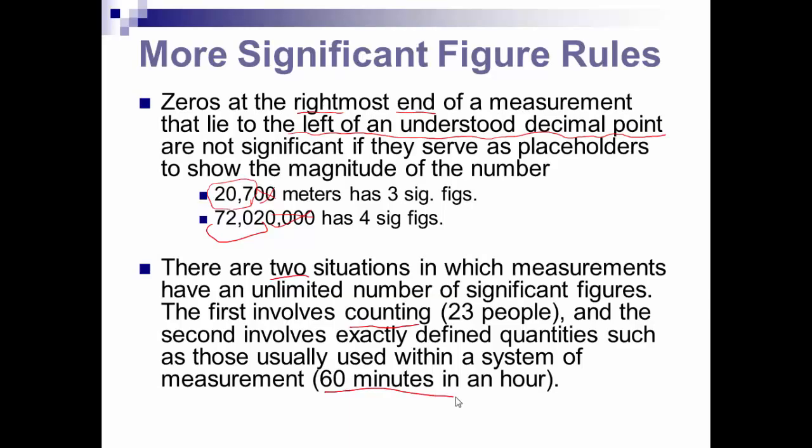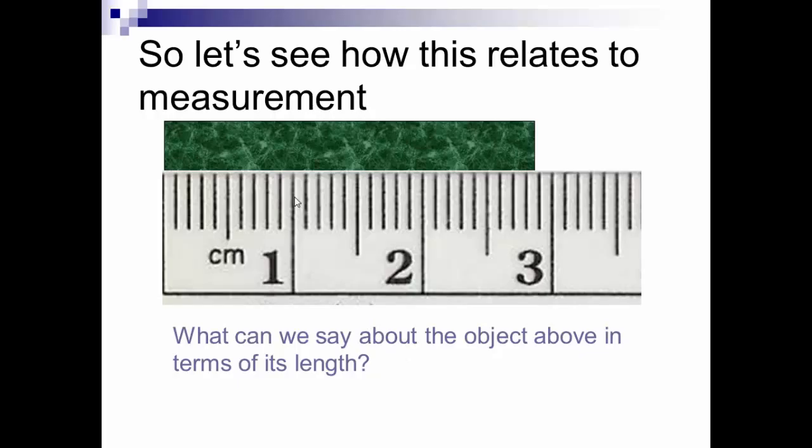There are, however, two situations that have an unlimited number of significant figures. One is counting. If you're counting, then they're all significant. The other is an exact quantity that we've measured. For example, we have determined that there are 60 minutes in an hour. Those minutes, all 60 minutes are significant.